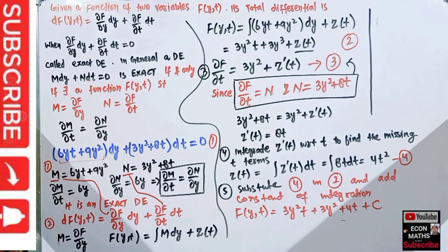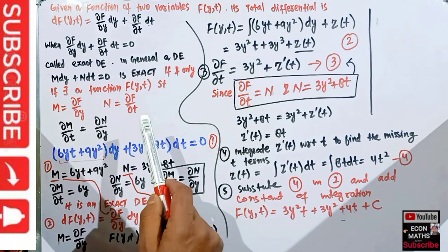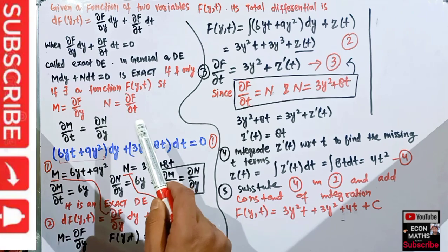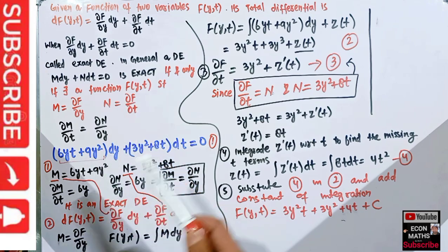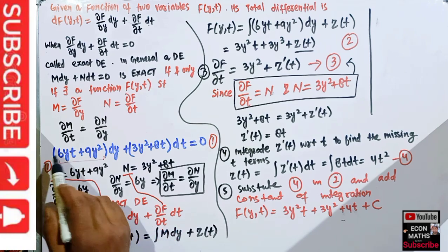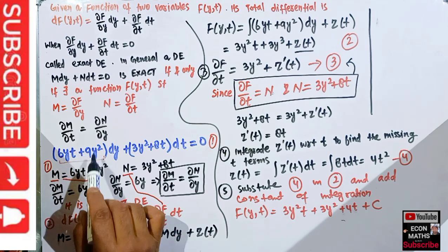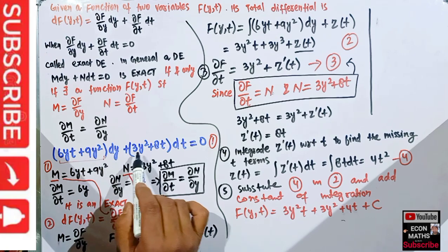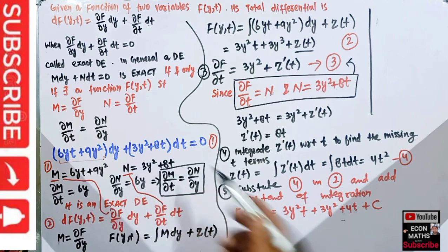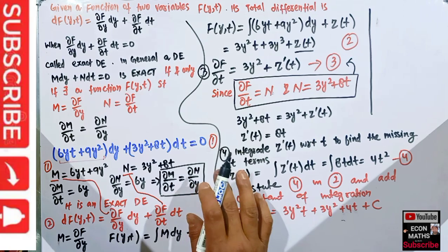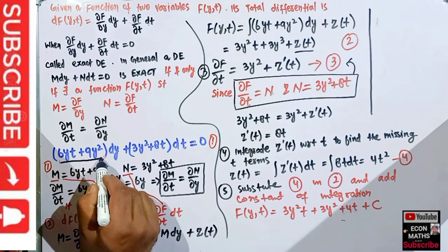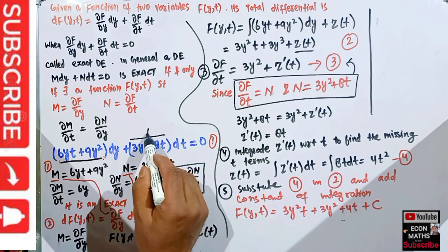Let's take a numerical example. The solution of an exact differential equation calls for successive integration with respect to one independent variable at a time while holding other variables constant. Given the differential equation (6yt + 9y²)dy + (3y² + 8t)dt = 0, the first step is to test whether it is exact.